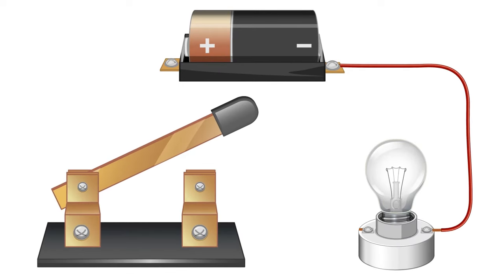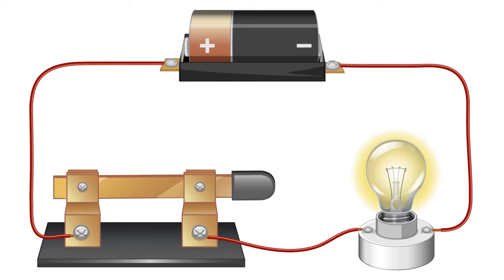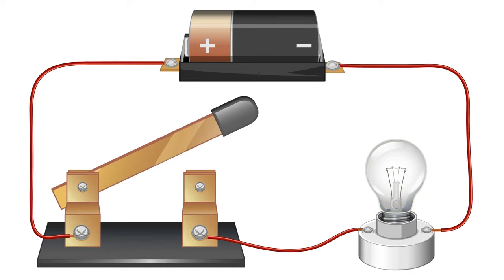This is how the components in a simple circuit can be assembled. When the switch is in the off position, there is a break in the circuit.